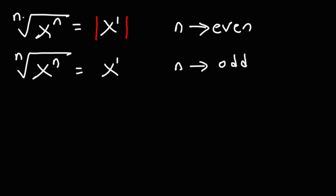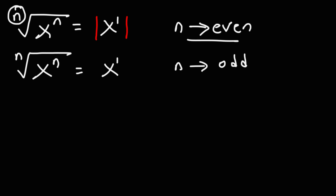So let's say you have the nth root of x to the n. This is going to simplify to x. If the index number is even, and it produces an odd exponent as a result, you need to use an absolute value. If the index number is odd, it doesn't matter what the result will be — you don't need to use the absolute value. So the only time you really need to use the absolute value symbol is if you have an even index number and the variable that comes out has an odd exponent.